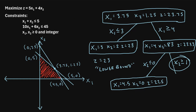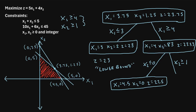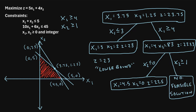For the x2 greater than or equal to 1 branch, we add the constraints x1 greater than or equal to 4 and x2 greater than or equal to 1. It turns out this is infeasible: if x1 is 4, then 10 times 4 is 40, and if x2 is 1, then 6 times 1 is 6, giving 40 plus 6 equals 46, which is not less than or equal to 45. So there is no feasible solution here and we stop branching. Therefore, our optimal integer solution is x1 equals 3, x2 equals 2, and z equals 23.